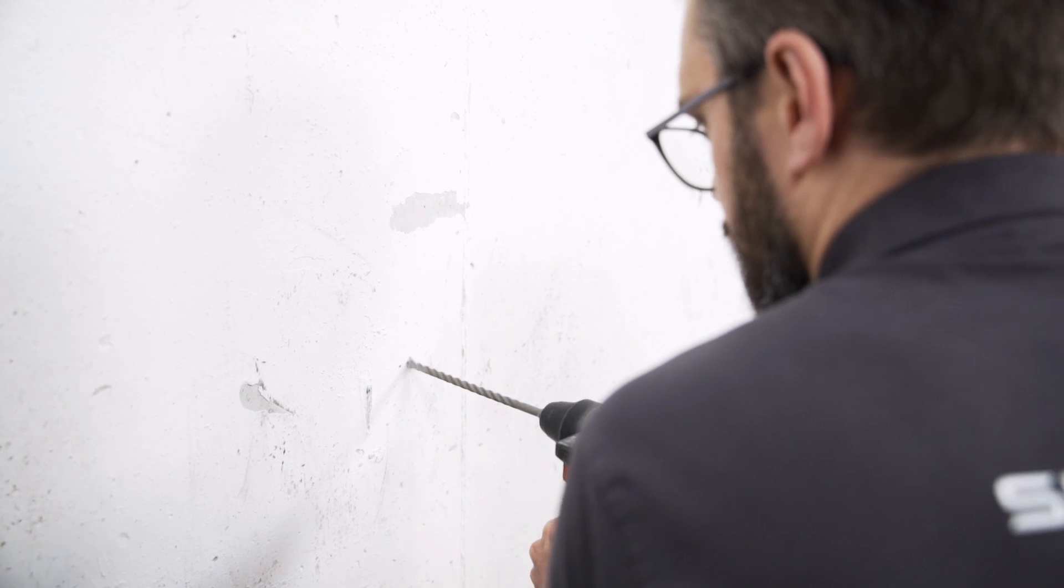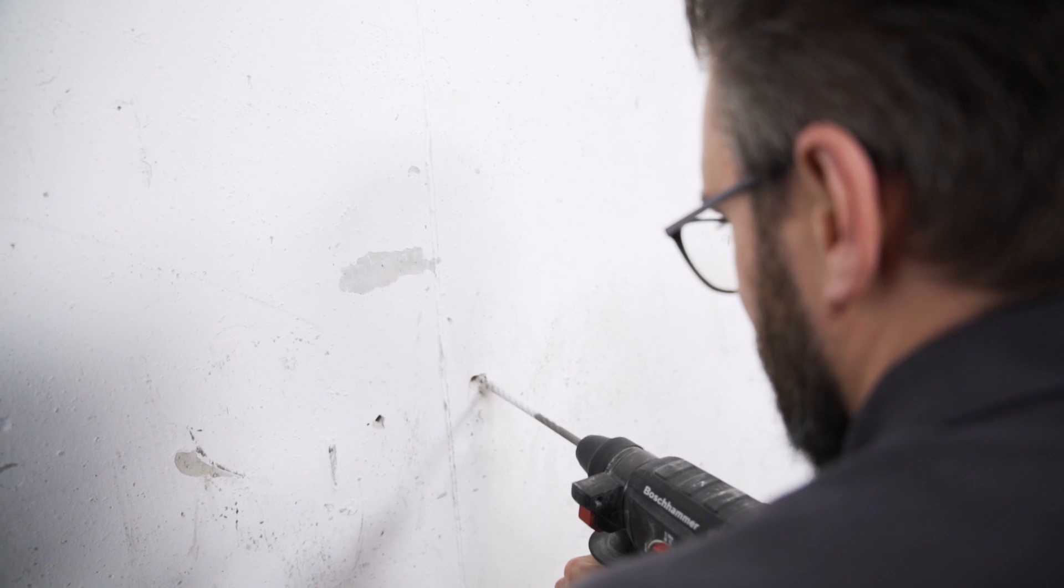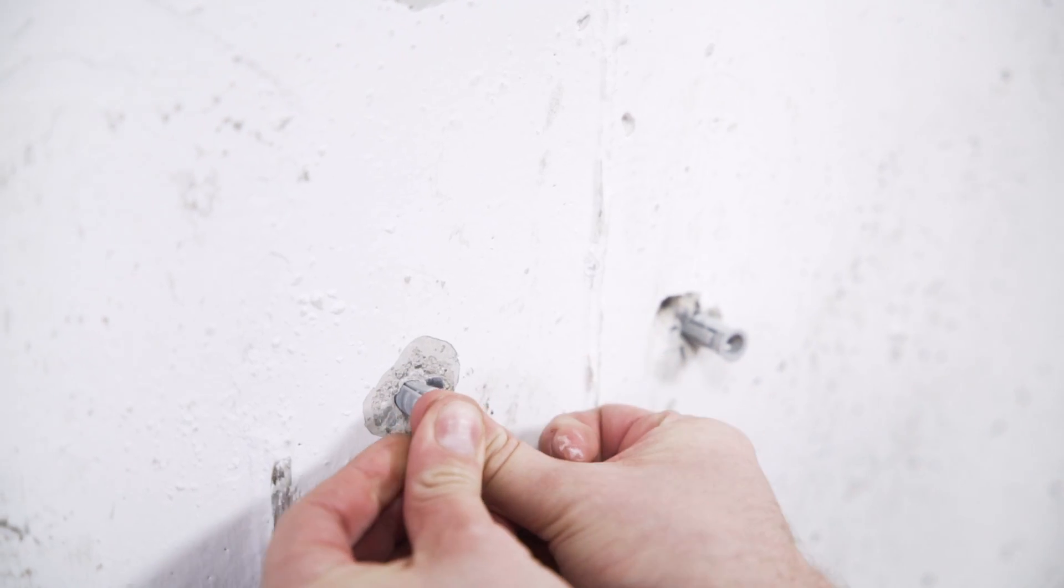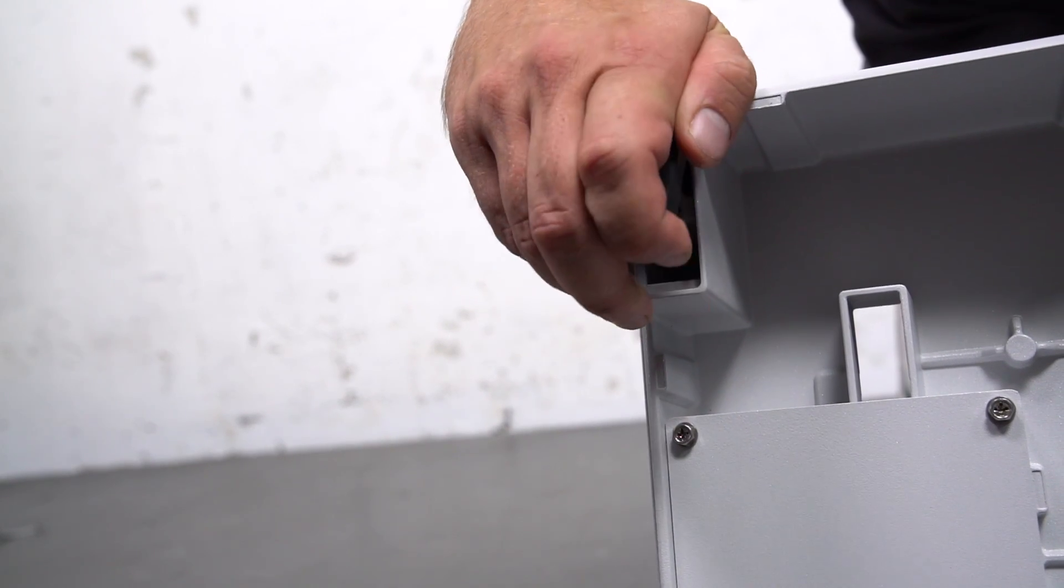The needed dowels are included in the delivery. Now let's start with building up the battery. Pay attention to leaving enough space between wall and battery. This is mandatory as the cabling will come out at the back of the battery in the end.